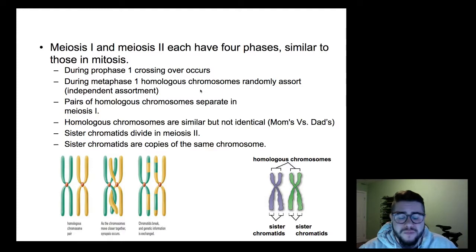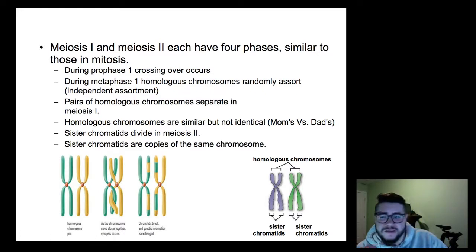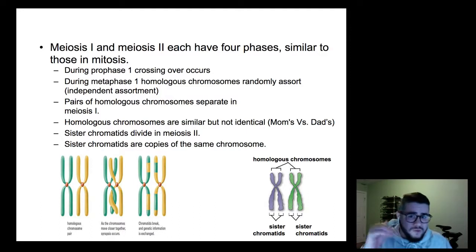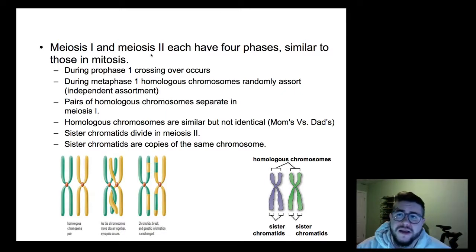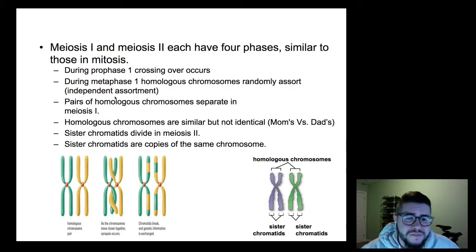If you remember the steps of mitosis — prophase, metaphase, anaphase, telophase, cytokinesis — you've kind of remembered half the steps of meiosis, because those same steps occur with just some differences in what happens. Meiosis overall is split up into two main phases: meiosis one and meiosis two. Each of those phases has four smaller phases: prophase, metaphase, anaphase, telophase. This slide contains all of the important information of what happens during meiosis — I'm going to go through it step by step.